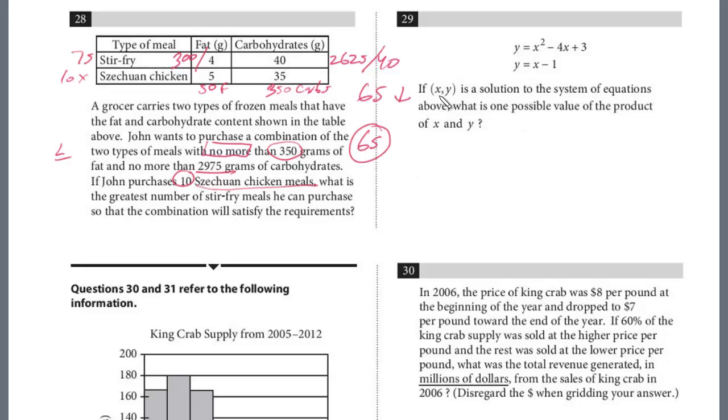All right, question 29. If (x, y) is the solution to the system of equations above, what is one possible value of the product of x and y? We can just use substitution here. Actually, we're just going to set both equations equal, because they're both equal to y. So we have x² - 4x + 3 = x - 1, right? Because they're both equal to y. And so we just solve this.